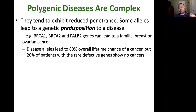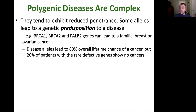One well-known example involves genes BRCA1, BRCA2, and a third gene, PALB2. Mutations in these genes can lead to familial breast or ovarian cancer. Famously, Angelina Jolie underwent a double mastectomy because she carries mutations in one of these genes and was predisposed to breast cancer with an 80% overall lifetime chance of getting the disease. She decided to do this proactively, being completely cancer-free, because living with an 80% chance was not acceptable to her. More and more people are taking that path.